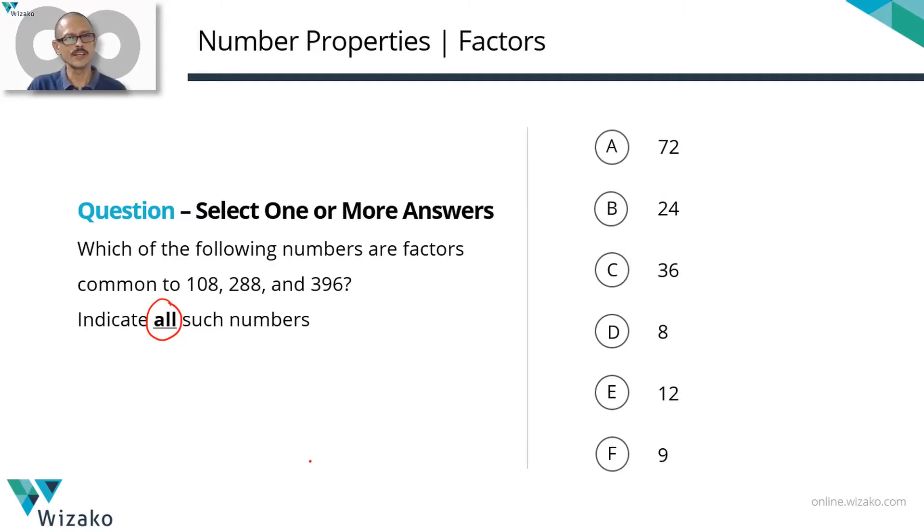Two basic ways of going about it. One is using concepts theory, which is how I'm going to be solving. The second one, you basically pick each of these numbers, check out whether they will divide 108, 288 and 396. If they divide all the three numbers, then that's one of the answer options. So both are valid methods. I'm going to start with the concept and theory method. You guys can try out after running through this video and check out from the answer options whether that makes sense. The second method is equally a valid method.